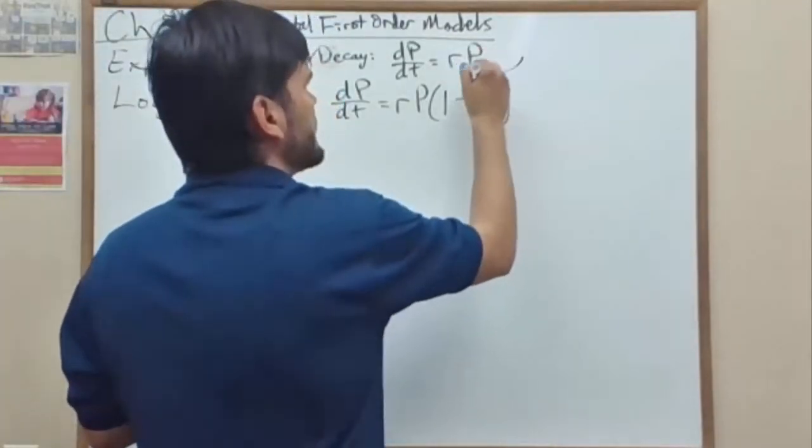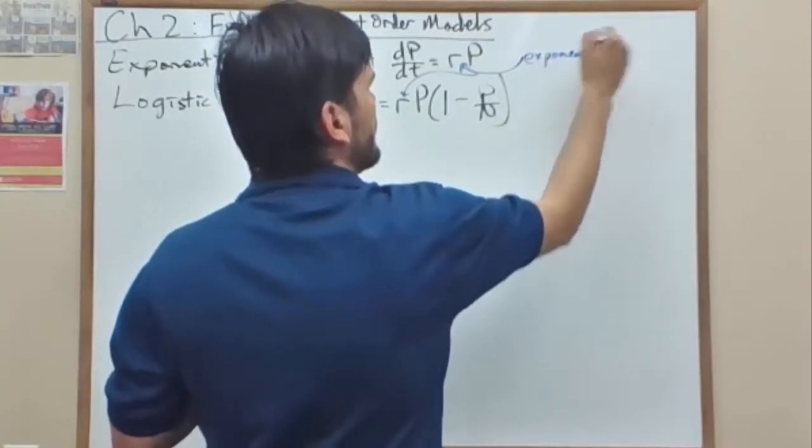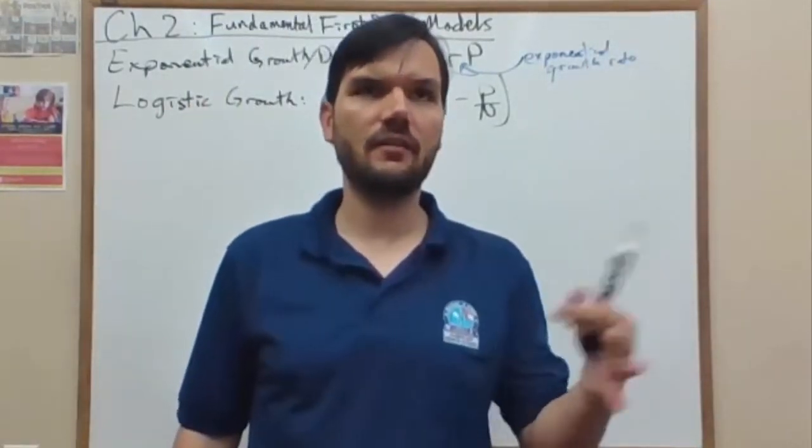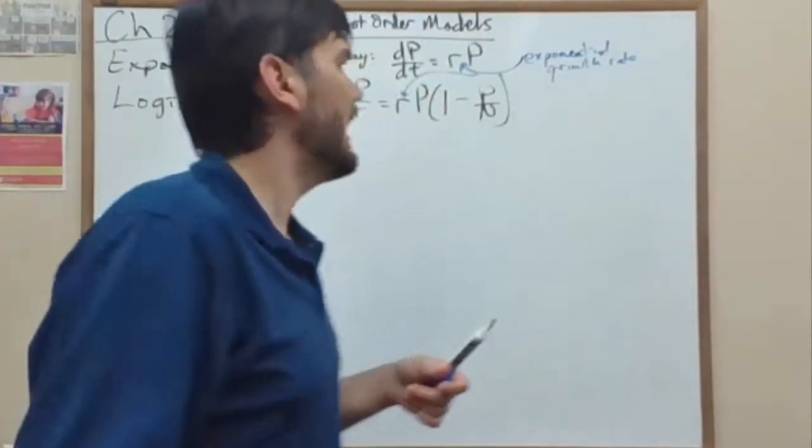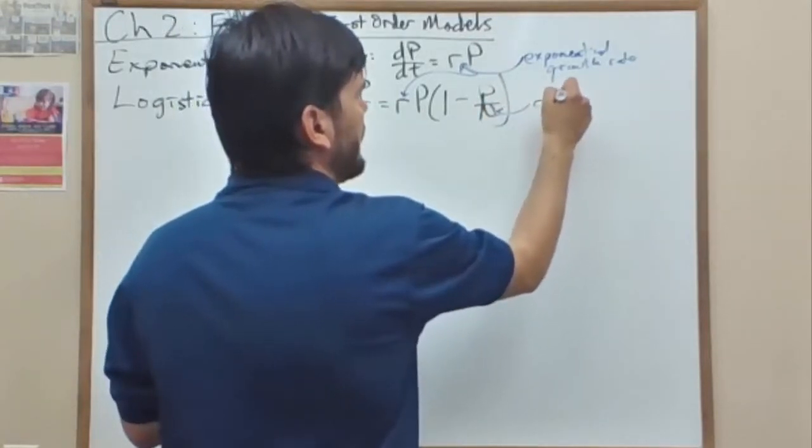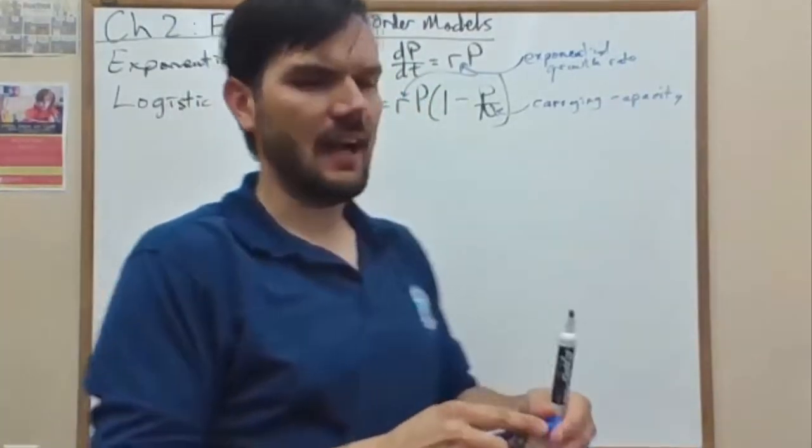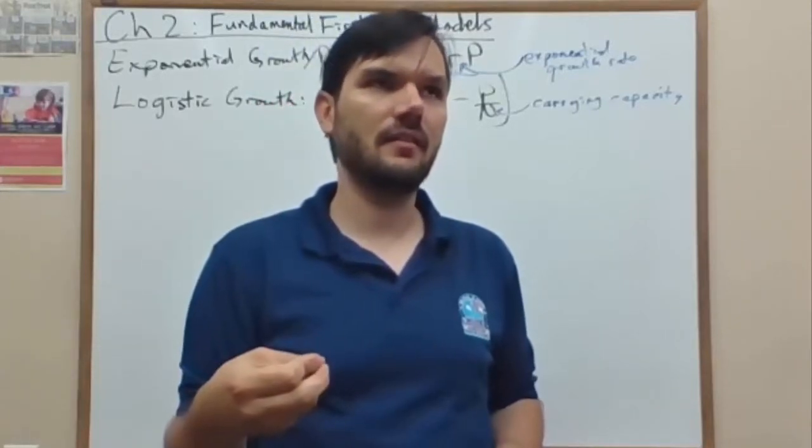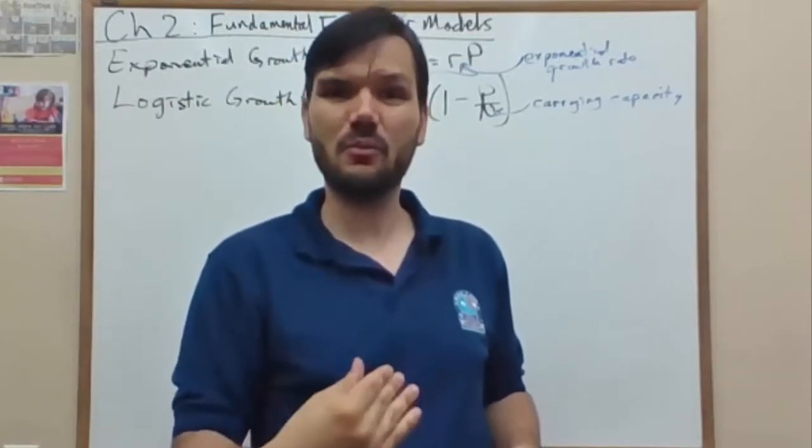So this second component will drive the rate towards 0 when p approaches n, when p of the population approaches the carrying capacity. In both cases, we have the exponential growth rate, which is how the population grows at the beginning. Exponential growth curve. And then we have the carrying capacity. And this is the ideal value of the population.